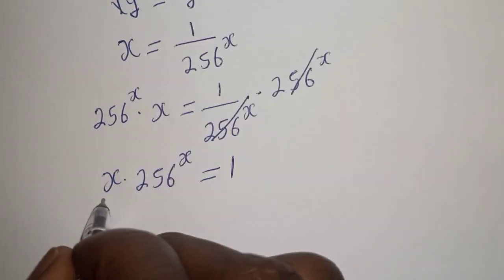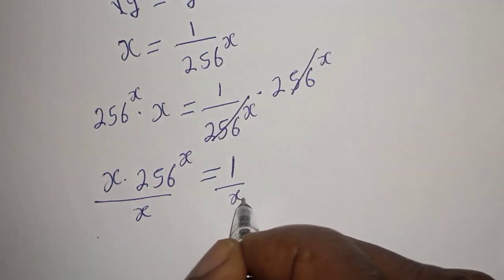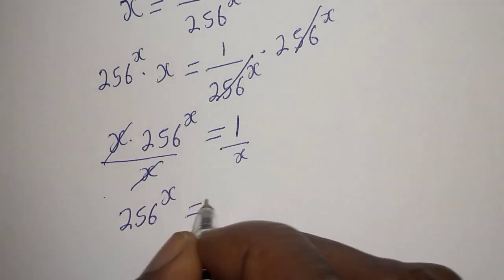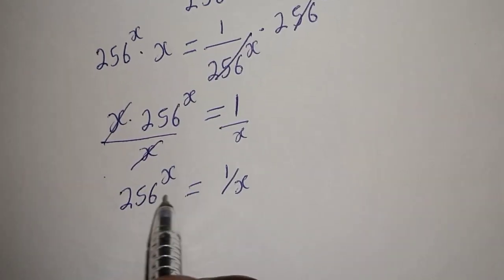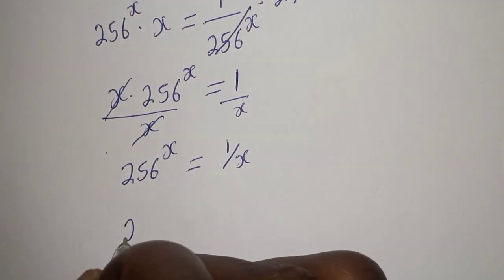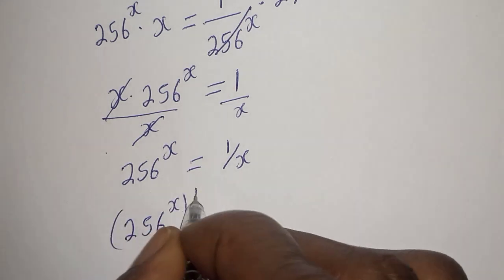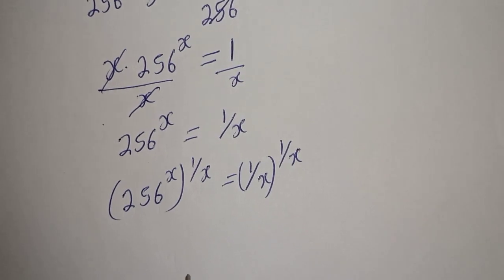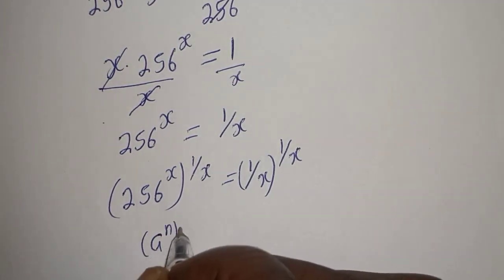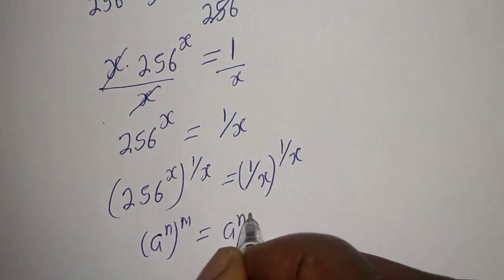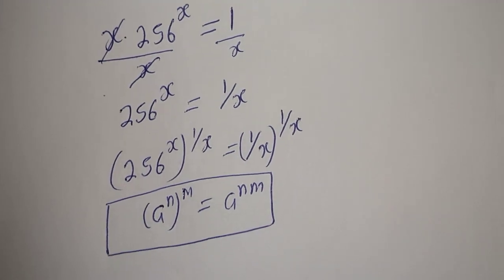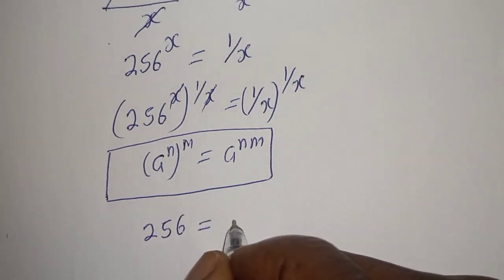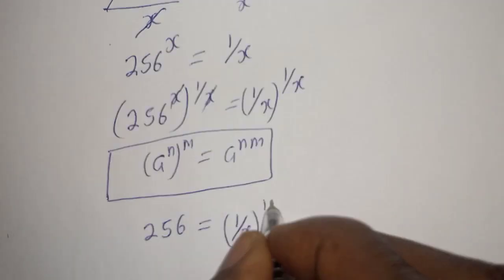Let's divide both sides of this equation by S. This will cancel, giving us 256 to the power of S is equal to 1 over S. Then let's multiply the exponent of both sides by 1 over S. Using the rule that a raised to the power n, to the power m equals a raised to the power n times m, we get 256 equals 1 over S, raised to the power of 1 over S.